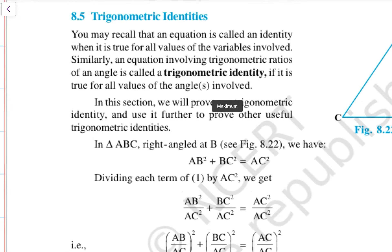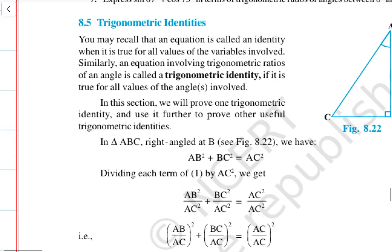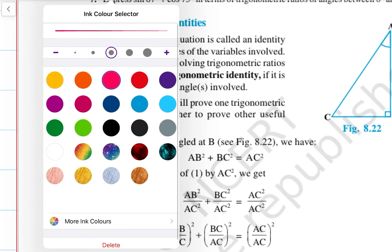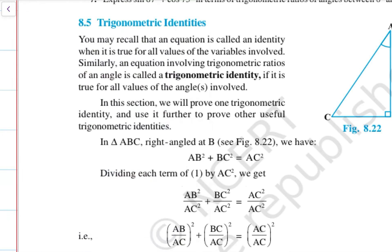Trigonometric identities. You may recall that an equation is called an identity when it is true for all values of variables involved. Similarly, an equation involving trigonometric ratios of an angle is called a trigonometric identity if it holds true for all values of angles involved.